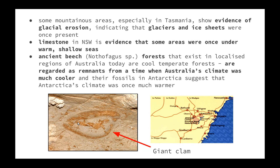We also have ancient Nothofagus species of forests that existed in localised regions of Australia that were cool temperate forests. These are regarded as remnants from a time when Australia's climate was much cooler, and their fossils in Antarctica suggest that Antarctica's climate was once much warmer. This shows that Australia and Antarctica were once joined together, and as they split, Australia moved northwards and became warmer while Antarctica moved southwards and became much cooler.